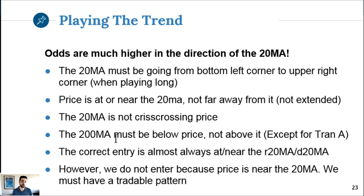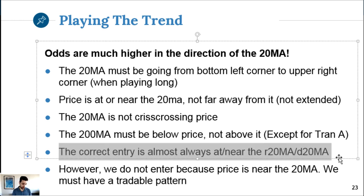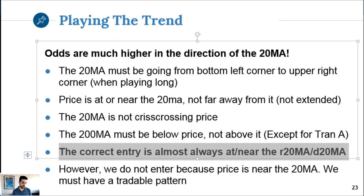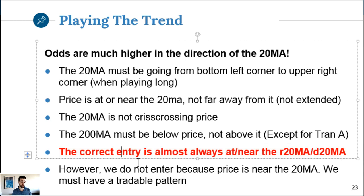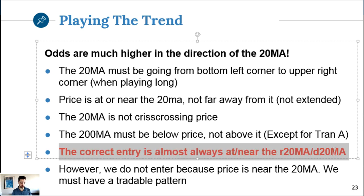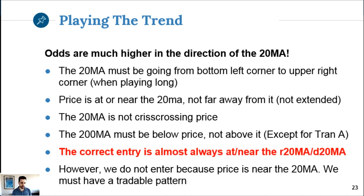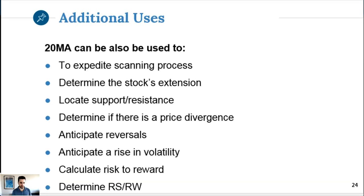Price should be above the 20 and above the 200 if the stock is in a well-established uptrend. You might want to put this on your monitor - never forget it: the correct entry is almost always at or near the rising 20MA, or if playing short, the declining 20MA. If you're a trend trader, this is your bible. However, we don't enter just because price is at the 20 - we also have to have a pattern.